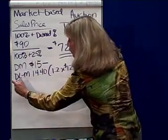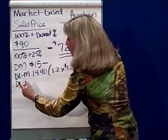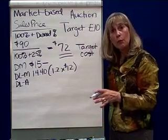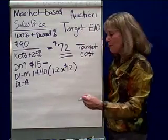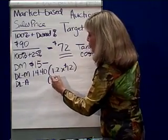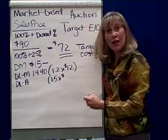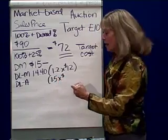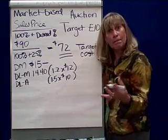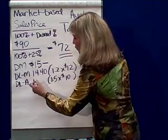We also have another direct labor cost for assembly. It takes 1.5 hours to assemble these fireplace screens, and assembly workers are paid $10 an hour, so that comes to $15 per fireplace screen.